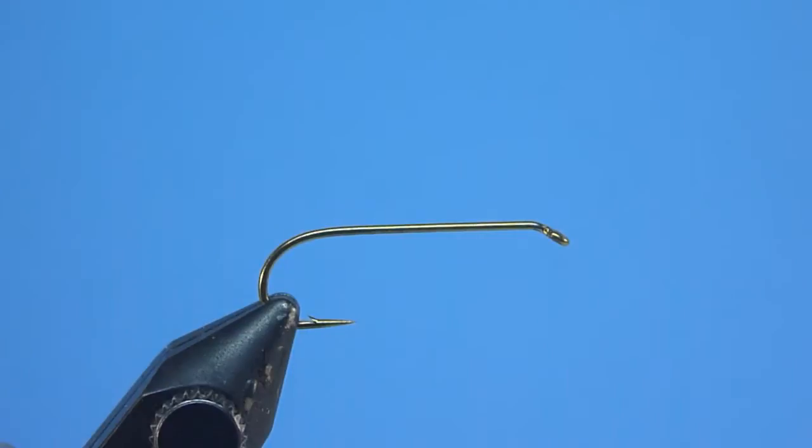With a nice healthy pile of pre-cut strips now built and set conveniently off to our side, we'll now begin tying the Chernobyl ant by starting our thread onto the hook via a tight-wound jam knot placed just behind our hook eye like shown. Naturally, once secured, we'll go ahead and rid ourselves of the excess with a quick, firm tug.